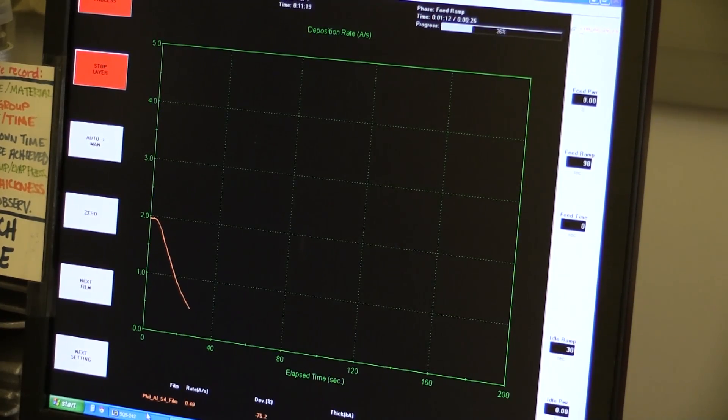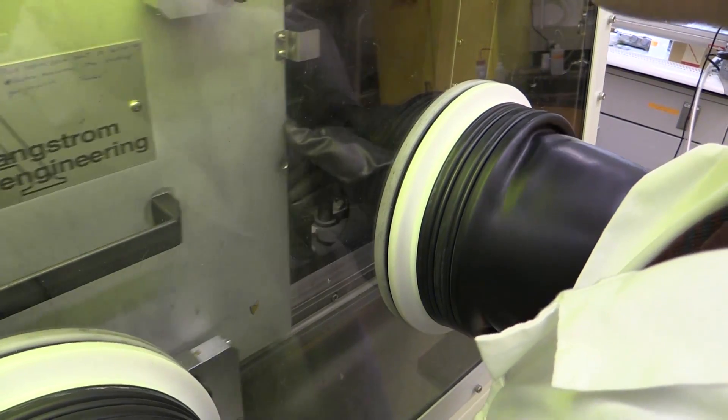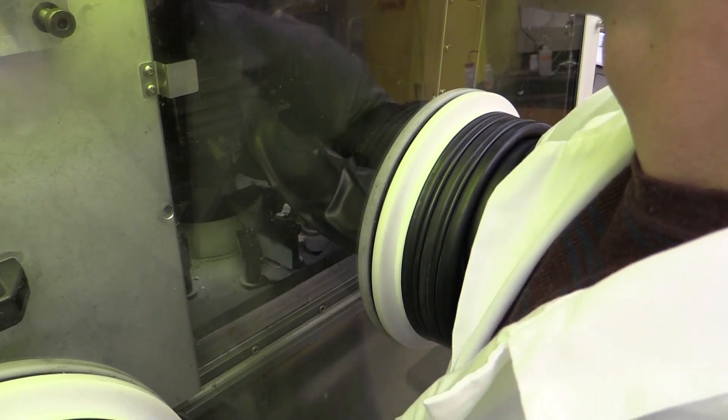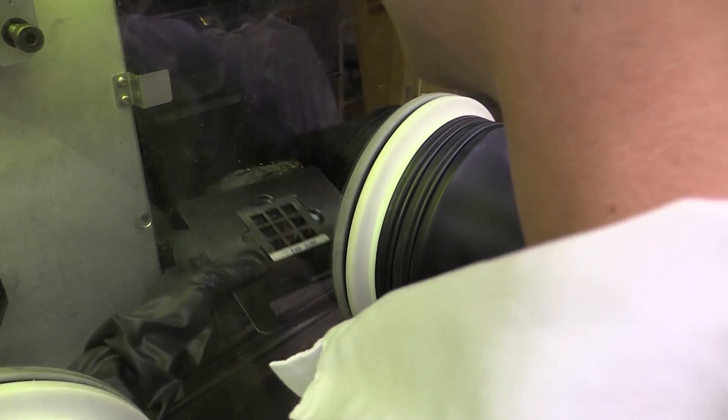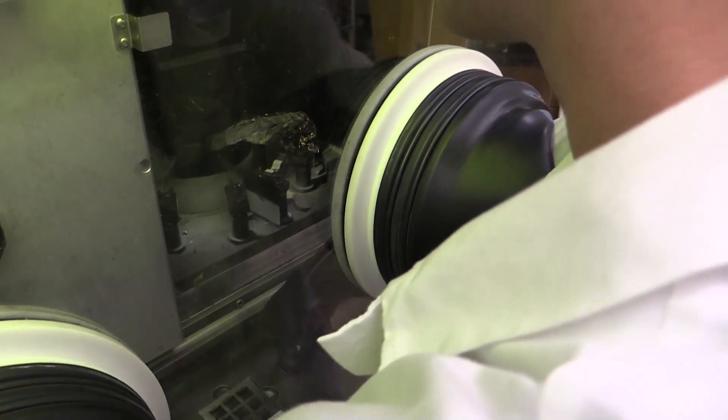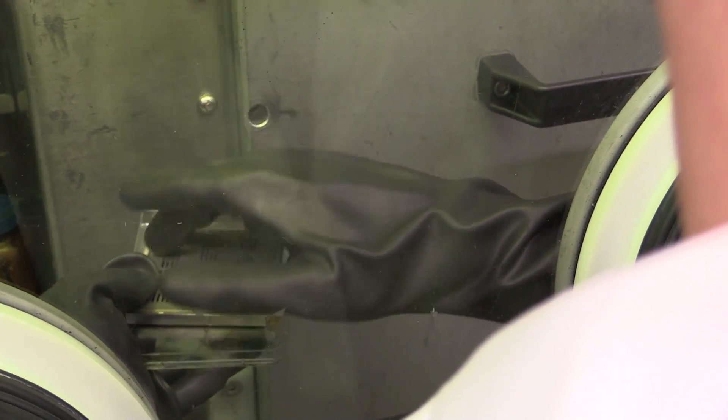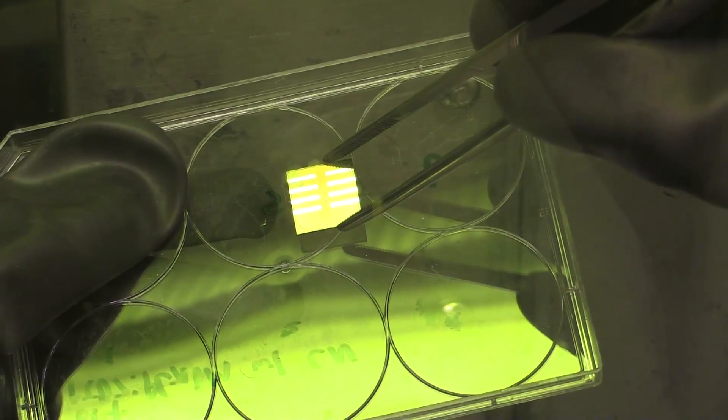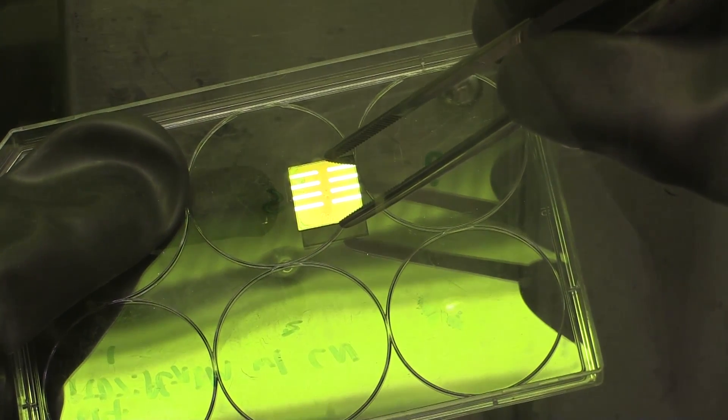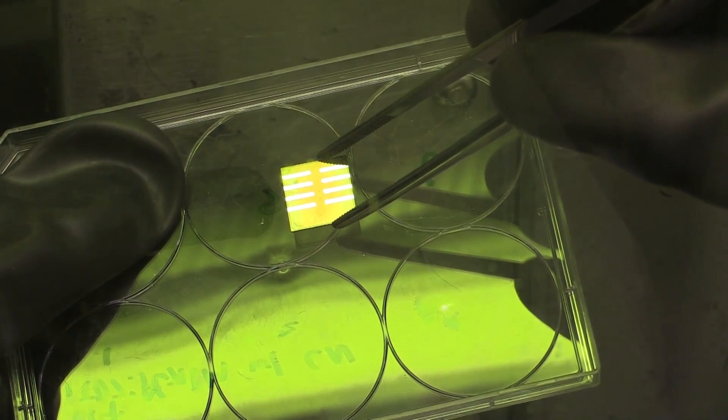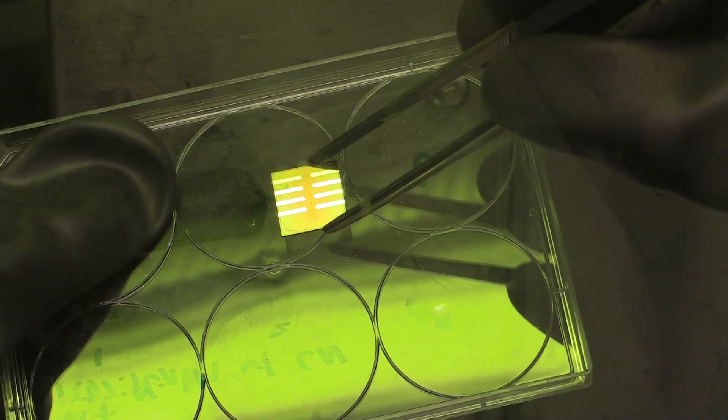When the deposition is finished, we re-pressurize the evaporation chamber and remove our samples and the metal boat. We then take the samples out of the evaporation mask and can see that we've deposited our contacts. Now the device is complete and we're ready to silver paint the edges of the gold contacts and test the device.